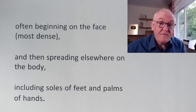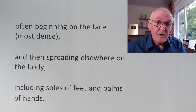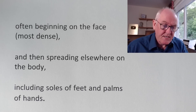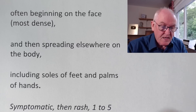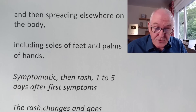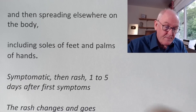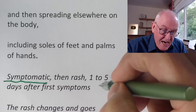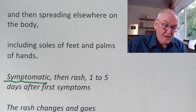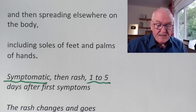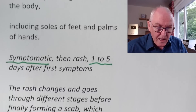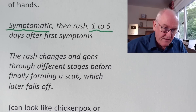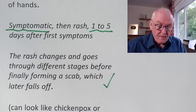This rash often begins on the face, but in some recent cases it began where the person was actually contaminated — in some cases through sexual activity. Generally it starts on the face where it's more dense, then spreads to other parts of the body including the soles of the feet and the palms of the hands. The rash typically appears one to five days after the first symptom — typically two to three days after the patient first starts feeling unwell — and goes through different stages before finally forming a scab which later falls off.